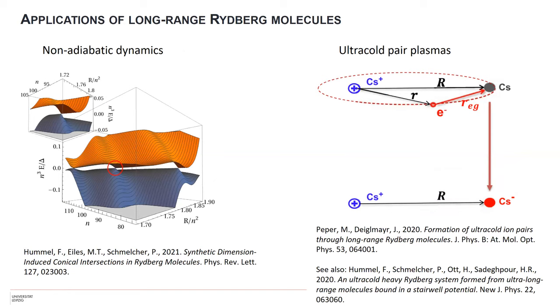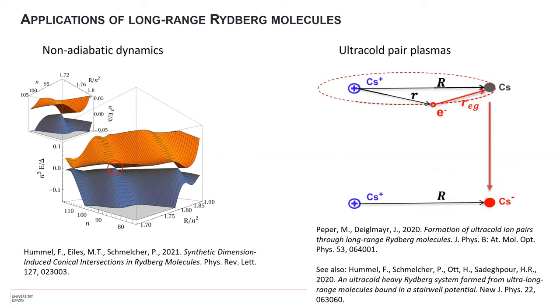There is another side to it that was also mentioned, which calls more to the chemist side. There are interesting aspects of non-adiabatic dynamics, especially if you consider the principal quantum number n as a continuous variable and treat it as a synthetic dimension. Even in the dimer, you can now span that two-dimensional space by principal quantum number and internuclear separation. In that synthetic space you have conical intersections that have a strong influence on the decay dynamics and L-changing collisions that should be observable in experiments.